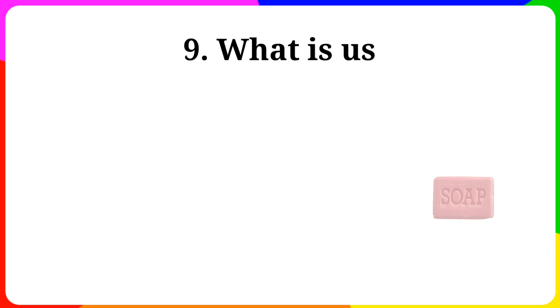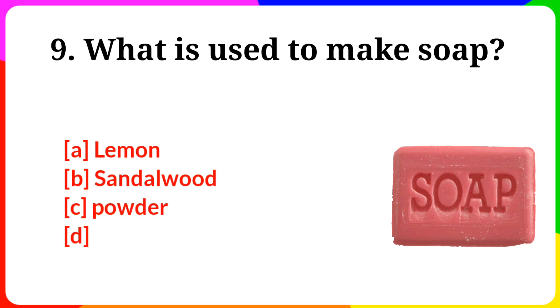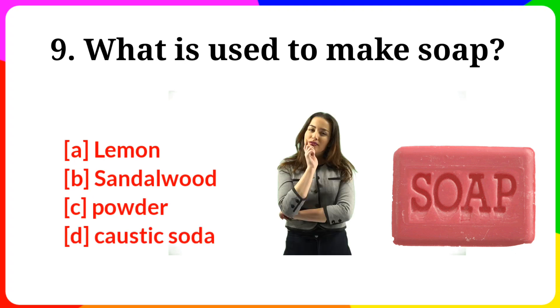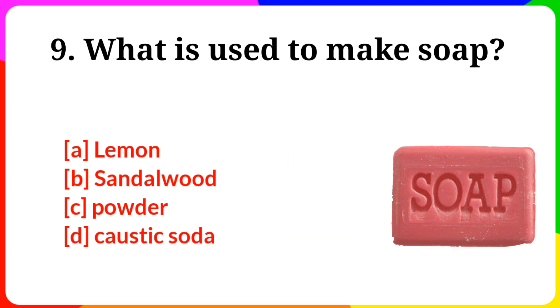Question number 9. What is used to make soap? Option A: Lemon. B: Sandalwood. C: Powder. D: Caustic Soda. Answer is option D, Caustic Soda.